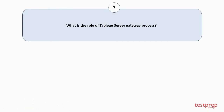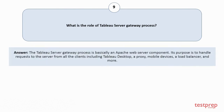Question number 9: What is the role of Tableau Server Gateway Process? The Tableau Server Gateway Process is basically an Apache Web Server component. Its purpose is to handle requests to the server from all the clients including Tableau Desktop, a proxy, mobile devices, a load balancer, and more.